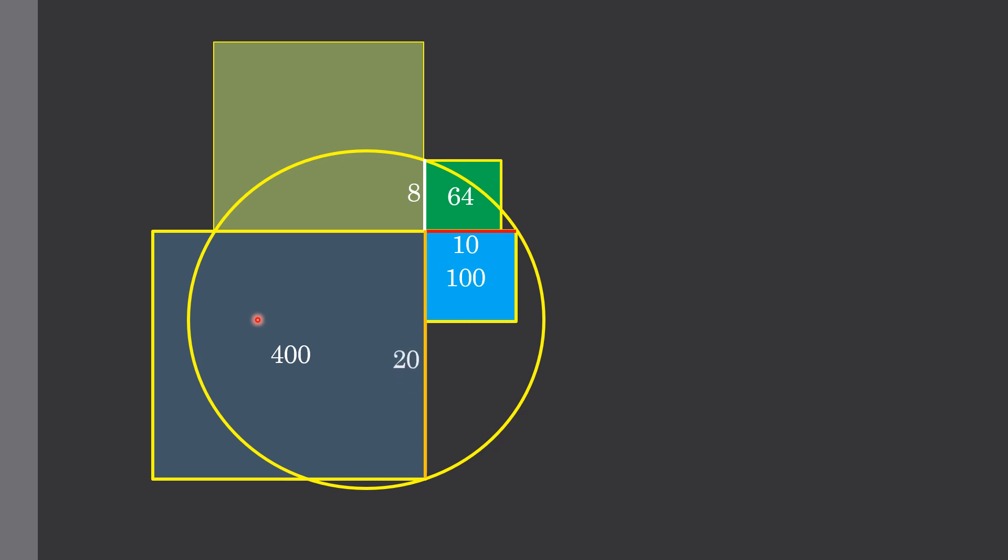And this larger square has side length equal to 20 units, while this square which has given no information, let's say its side length is equal to x.